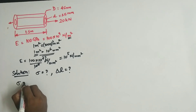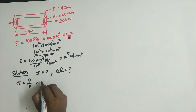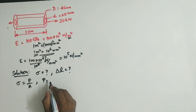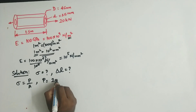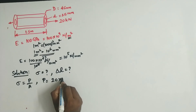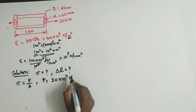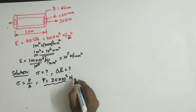The stress formula is load divided by area. The load is 20 kilonewtons, and kilo means 10 power 3, so the load is 20 into 10 power 3 newtons.